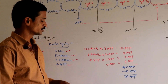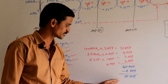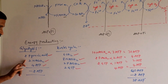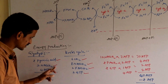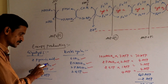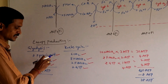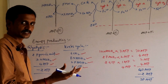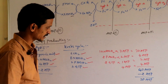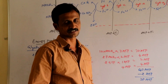In some CBSE books, the production is mentioned as 36 ATPs. This is because in glycolysis, 2 NADH2 are produced in the cytoplasm. They need to shift into the mitochondrial matrix where Krebs cycle occurs. When these 2 NADH2 shift from cytoplasm into mitochondrial matrix, 2 more ATPs are consumed for their movement — which is why some books show 36 ATPs.